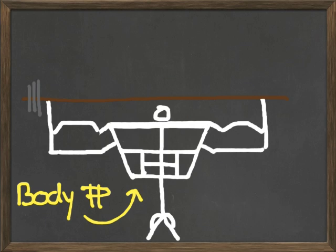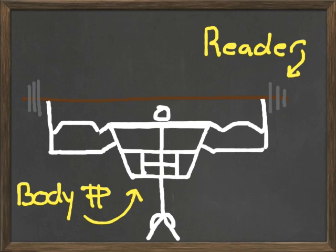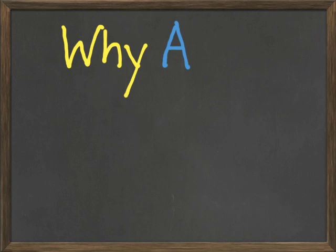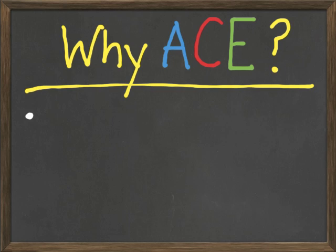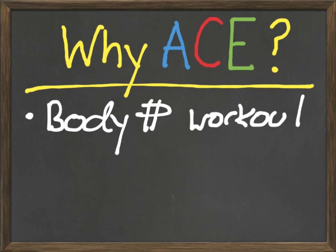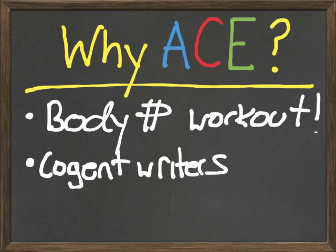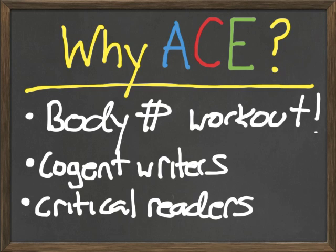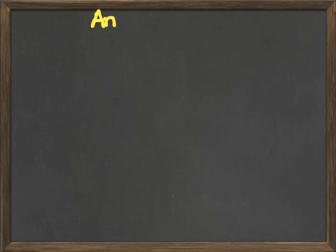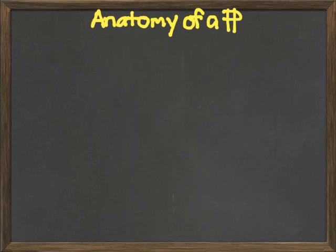Strong body paragraphs carry the reader from the beginning to the end of an argument. The ACE model gives you space to work out these body paragraphs, and it makes writers more cogent and readers more critical. When done successfully, you will better understand the anatomy of the paragraph and how the different parts function cohesively.